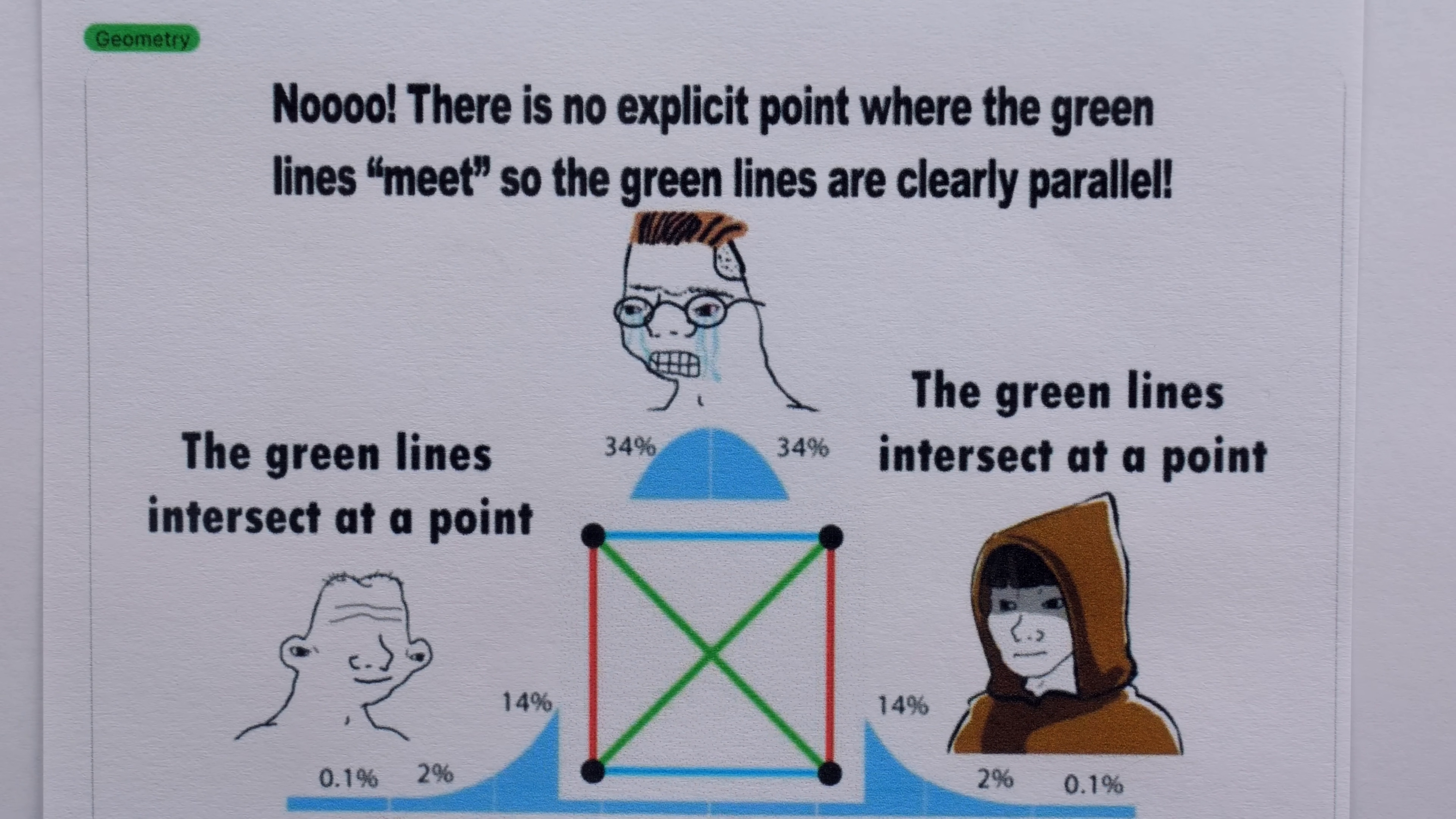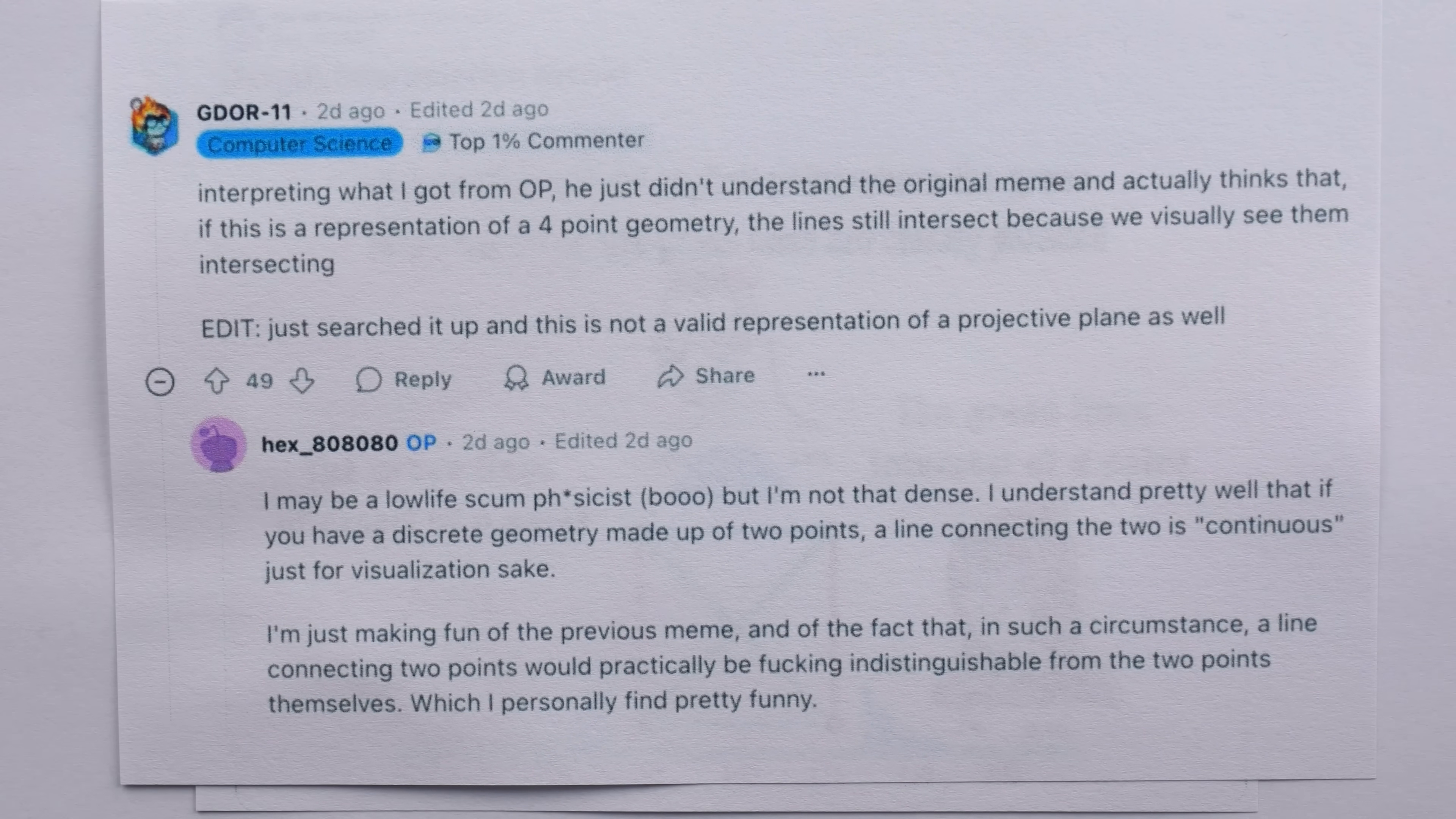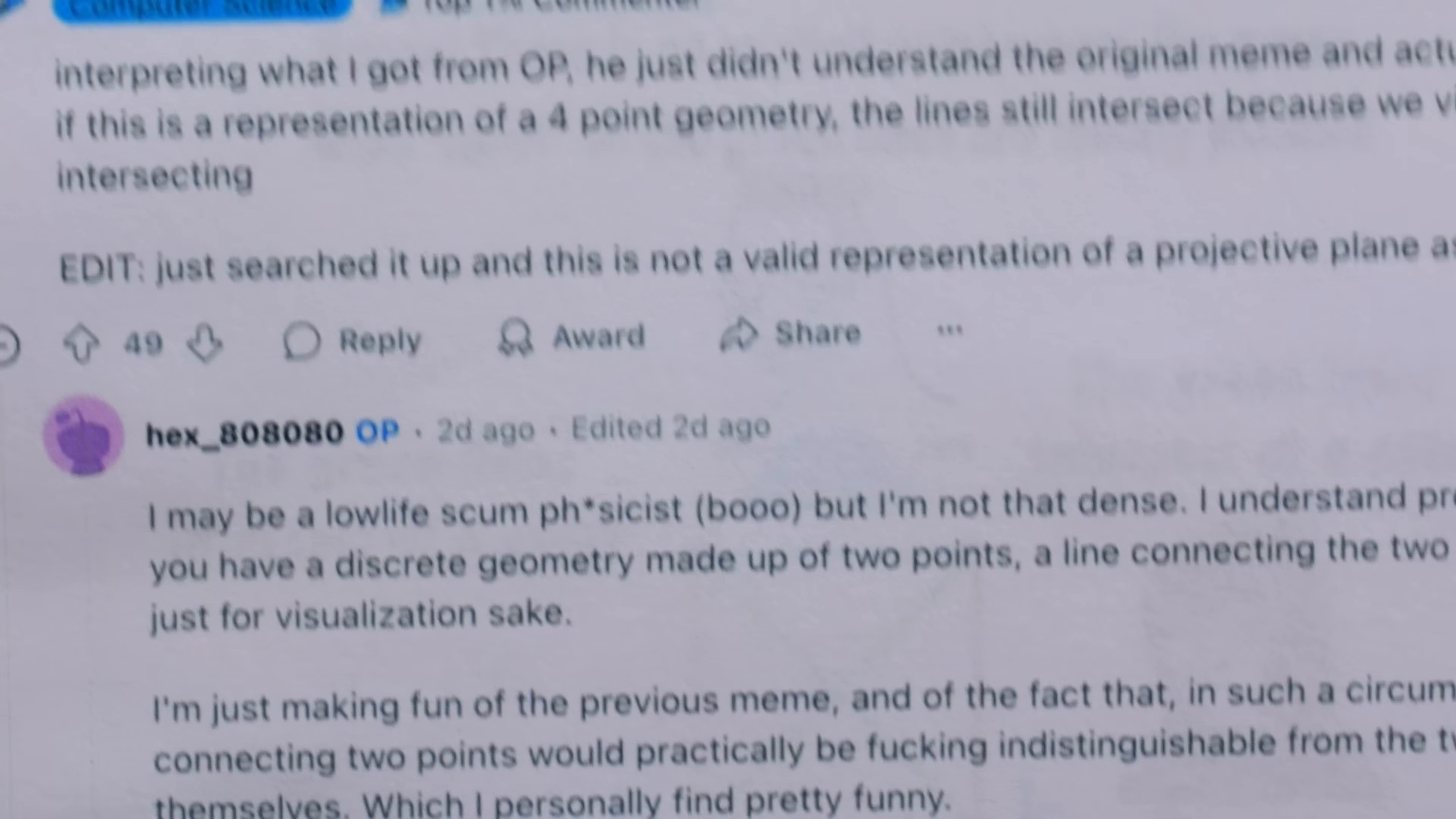there's no explicit point where the green lines meet, so the green lines are clearly parallel. While both of our extremes agree, the green lines intersect at a point. After looking at some of the heated discussion and commentary that followed, it seems that OP was not really disagreeing with the original meme, but more so having a laugh at this method of drawing the situation, which is what makes it possible for the confusion in the original meme to occur at all. But ultimately, people made a bit of fun of him for not understanding the original meme.